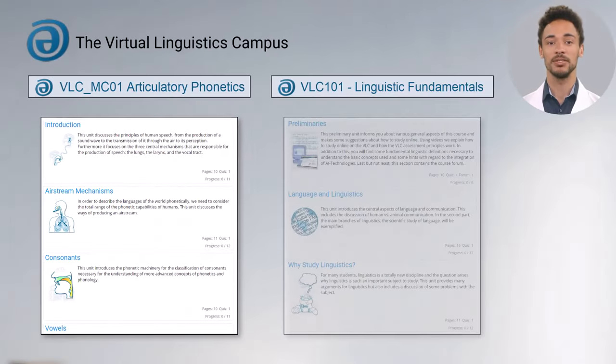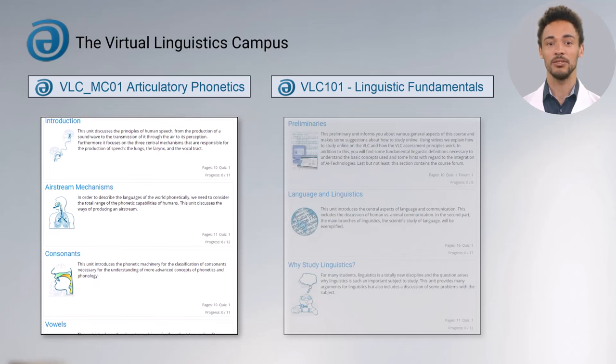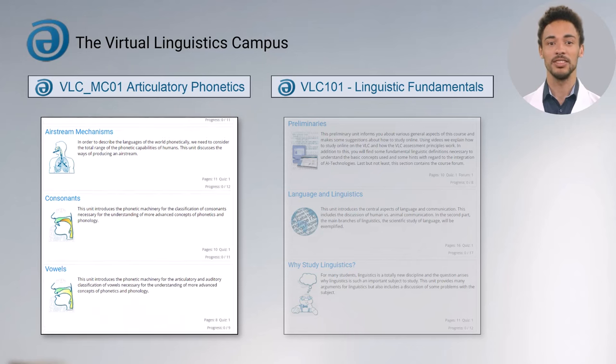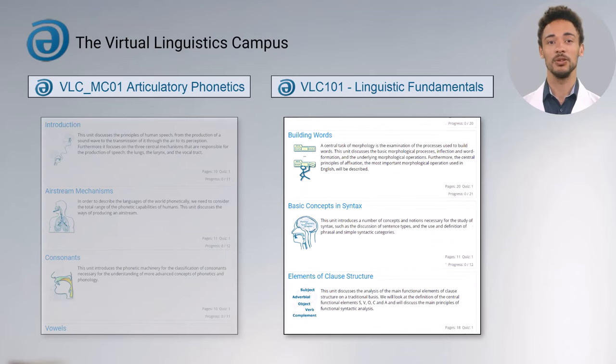All VLC courses are subdivided into topics. Up to four topics in micro-credential courses and up to 14 topics in regular VLC courses.